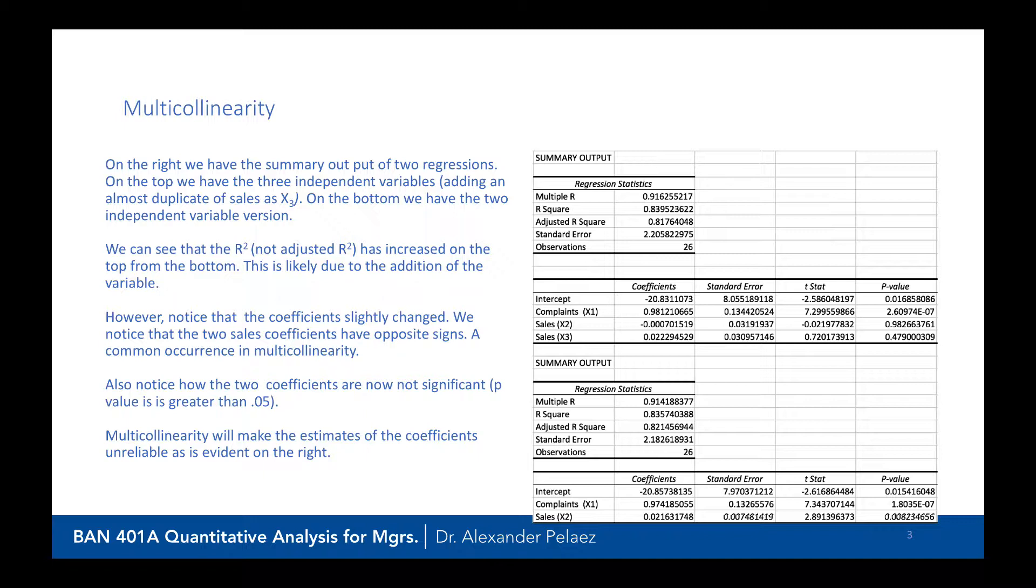This is likely due to the addition of the variable. As we said in a previous module, every time you add another variable, you'll always increase your R-squared and multiple R. However, notice that the coefficients have changed. We notice that the two sales coefficients have opposite signs, a common occurrence in multicollinearity. Also notice how the two coefficients are now not significant. The p-value is greater than 0.05. So multicollinearity will make the estimates of the coefficients unreliable, as evidenced on the right.